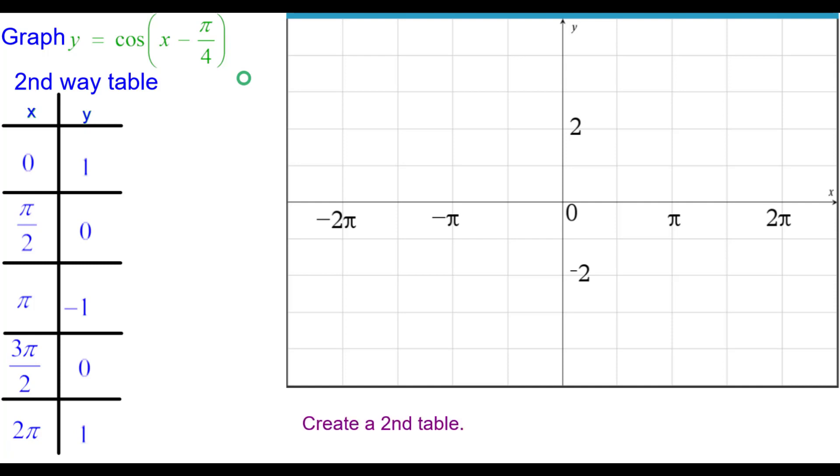We need to create a second table for our graph. And we look at the parameters and the minus pi over 4 inside the parentheses. It means to add pi over 4 to each x value to shift it to the right.